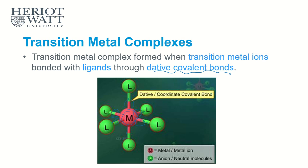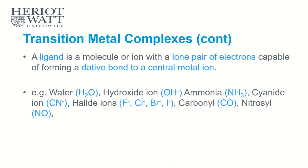Ligands must have at least one lone pair of electrons to form dative covalent bonds with the transition metal ion. Common examples include water (two lone pairs), hydroxide (three lone pairs), ammonia (one lone pair), cyanide, halide ions (three lone pairs), carbonyl, and nitrosyl. Any molecule or ion with lone pairs can act as a ligand.